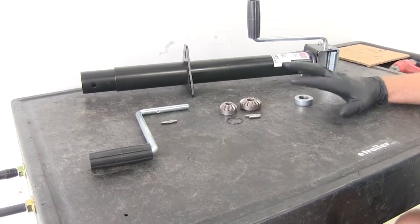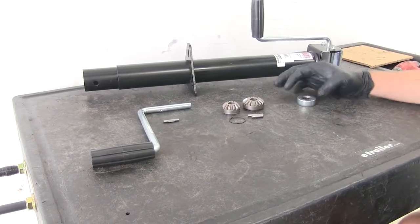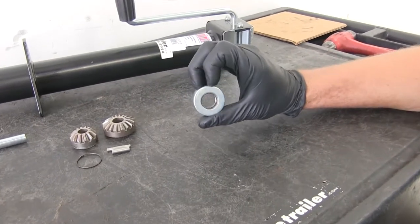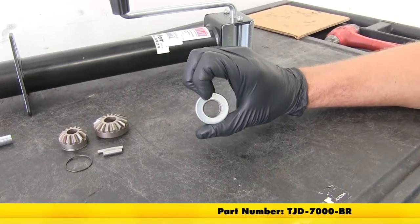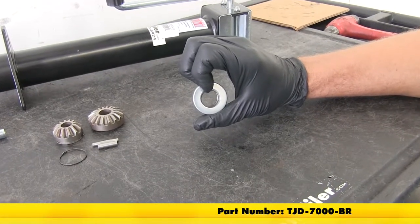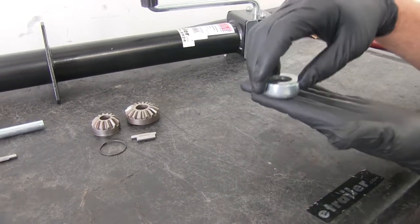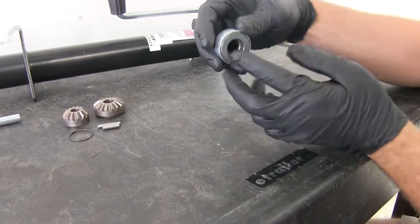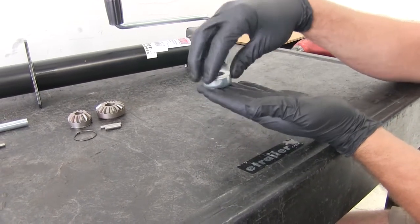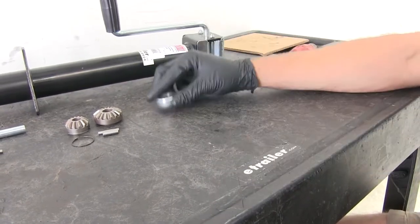Now there are going to be three kits that you'll need to completely rebuild it, or you can use just whichever one you need. Starting at the bottom here in the base, we've got a bearing. This is part number TJD-7000-BR. That's our friction reducer. So this is going to sit on the screw. You can see how the inside turns independently from the outside. So that sits down on our screw and as that rotates it keeps the friction from building up on the top plate.